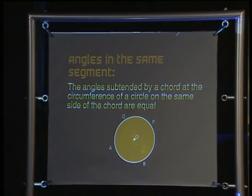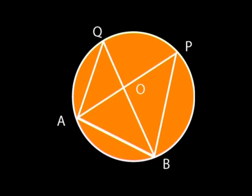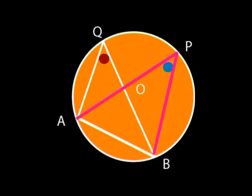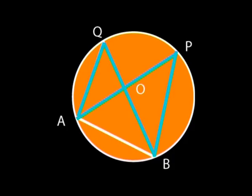We need a circle with center O and a chord — let's make that AB. We can put two other points on the circumference, say P and Q, making sure that they are both on the same side of AB. We can create angles AQB and APB by joining the points to A and B. Do you see the shape created by the overlapping triangles? We sometimes call this the bow tie or butterfly theorem because of the clear shapes created — just a useful way to remember it.